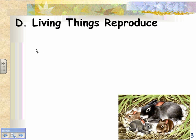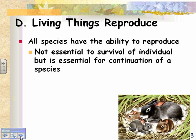We're talking about characteristics of life, and the next characteristic is that living things reproduce. All species have the ability to reproduce. This is not essential to survival for the individual, but it is essential for the continuation of the species. That means every individual living thing doesn't have to reproduce, but the species as a whole needs some individuals to do so.